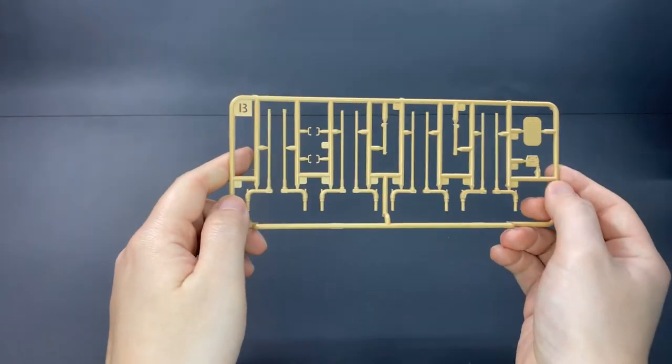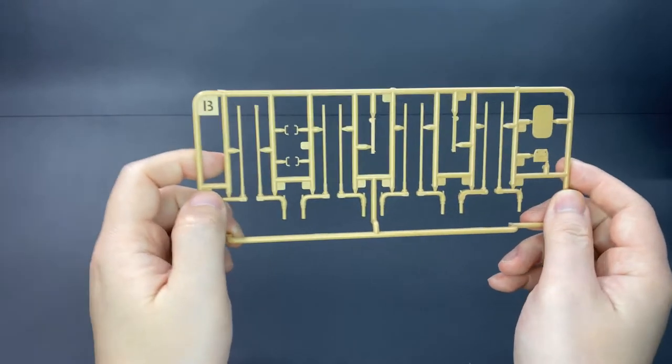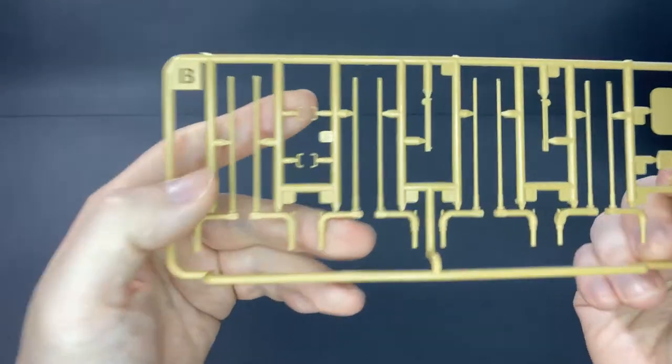Sprue B, there are also two of sprue B's in the box. These are the torsion bar suspensions.